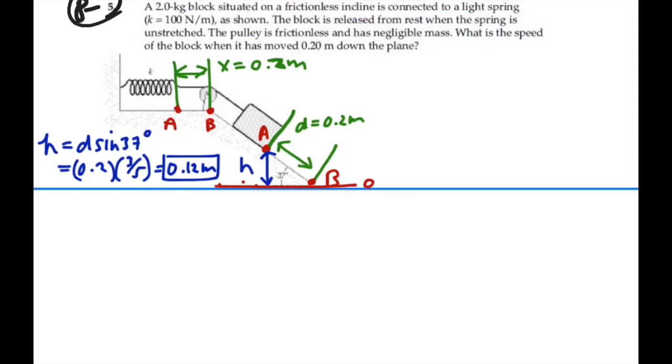Alright, I think we're ready to write our one equation to rule them all. We have kinetic energy at A plus potential energy at A plus any work done along the way equals our kinetic energy at B plus potential energy at B. In this case, we're starting from rest, so we have no kinetic energy at A.